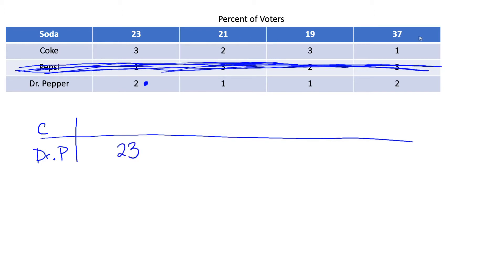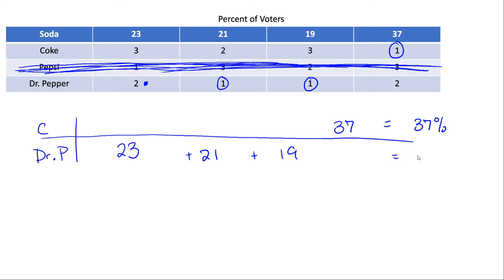For the rest of the columns, everybody else's first choice is still in the election, so they don't have to change their votes. If your first choice is still included in the runoff, you still vote for your first choice. Adding everything up, Coke ends up getting 37% and Dr. Pepper ends up getting 63%. So Dr. Pepper also wins the runoff.